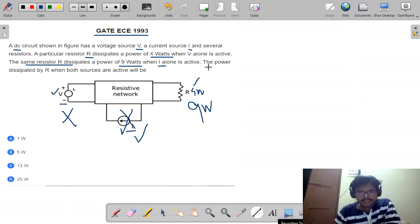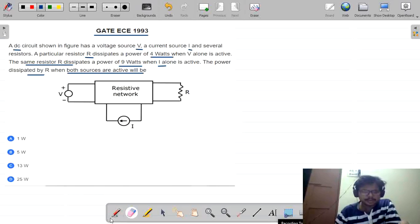Now the question is, the power dissipated by resistor R when both sources are active will be. What they are asking? Assume if both V is acting and simultaneously I is acting, then what is the power dissipated across the resistor R? It is the question they are asking.